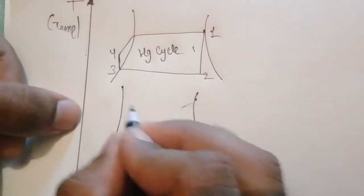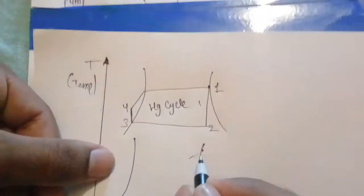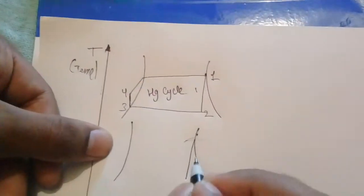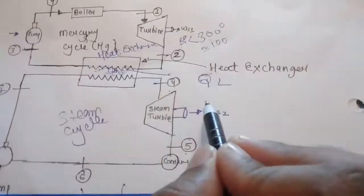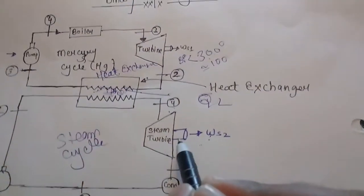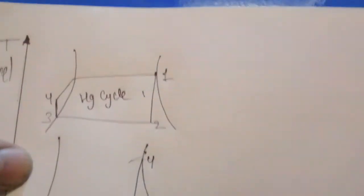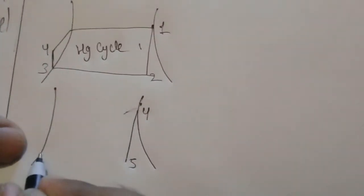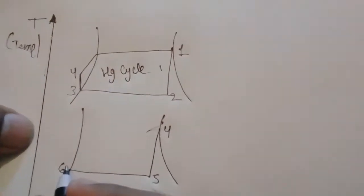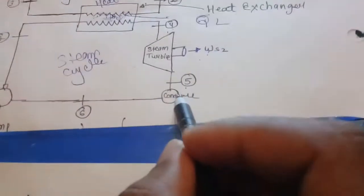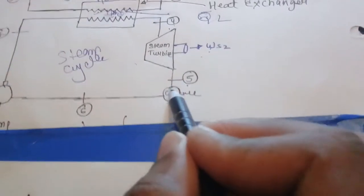Now we are going to work the water-steam cycle. From 4 to 5 is the turbine work, and as you can see here, 4 to 5 is the turbine work which we get WS2 for the steam turbine. This point is 4 and this one is 5.